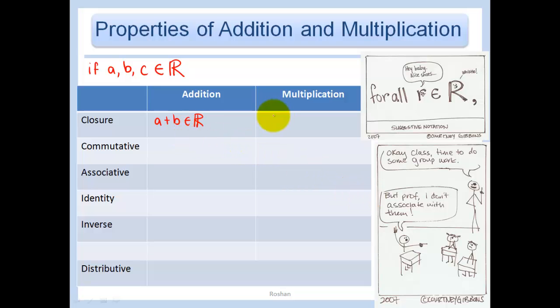We also have the closure property for multiplication, which says A times B is an element of the real numbers. Again, you know 3 is real, you know 5 is real. By the closure property of multiplication, we know 3 times 5, which is 15, is a real number.